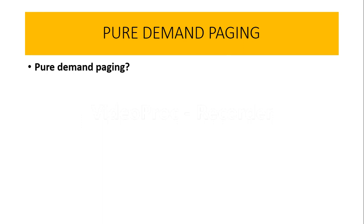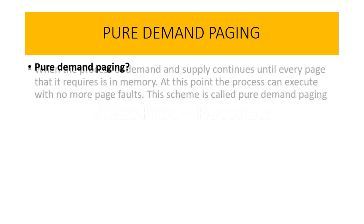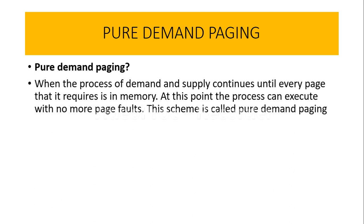Now let us understand pure demand paging. Whenever pages are supplied purely on demand, we call it pure demand paging. Once a page is swapped in after a page fault, process execution continues until the need for another page arises again. This process of demand and supply continues until all required pages are loaded into main memory, at which point the process can execute without any page faults. This scheme with no page faults occurring is called pure demand paging.